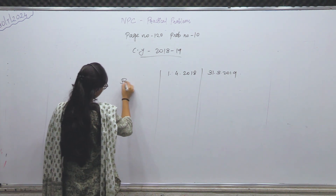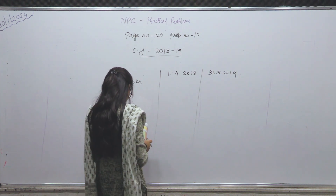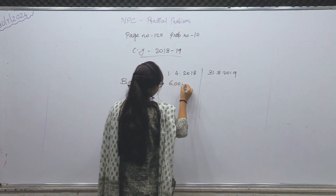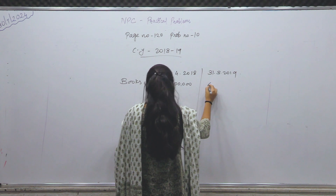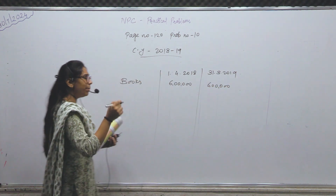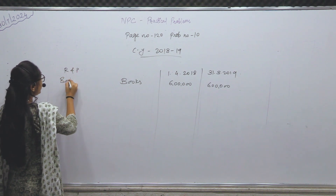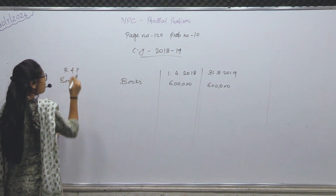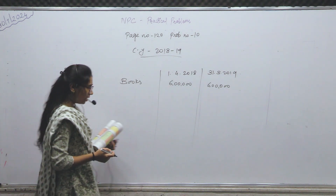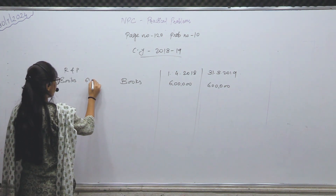1st April 2018 के balance दे रखे हैं और 31st March 2019 के balance दे रखे हैं। Books का opening balance क्या है? 6 lakh। Closing balance क्या है? 6 lakh ही है। Receipt and payment account में books हम लोग ने purchase किये — payment में दिया है — कितने के किये हैं? 61,000।